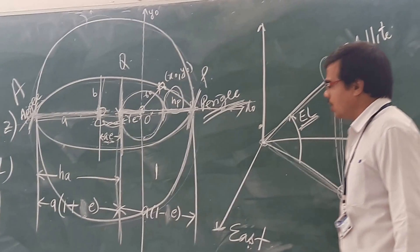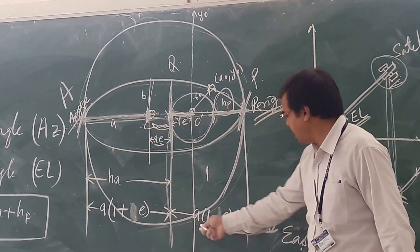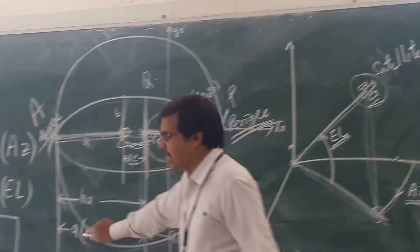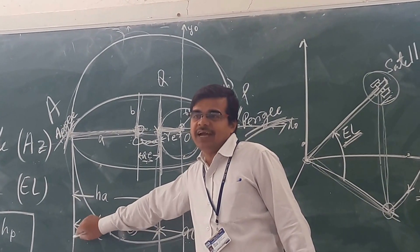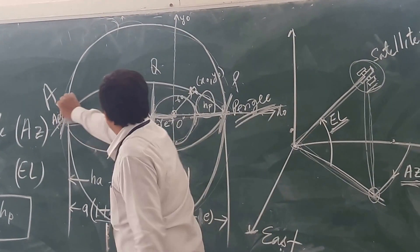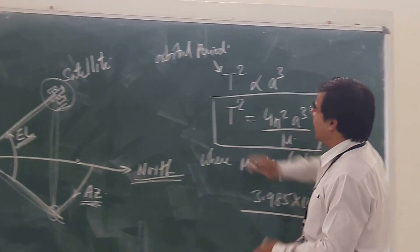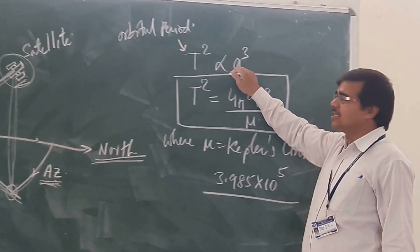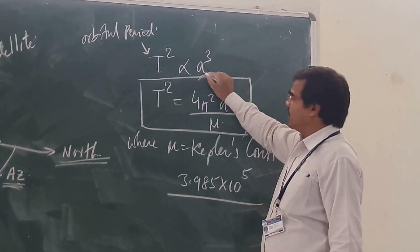So you are having a(1 + e) and a(1 - e). We are taking a as a common. When we take a as a common, we get these expressions. This distance leads us into Kepler's third law.